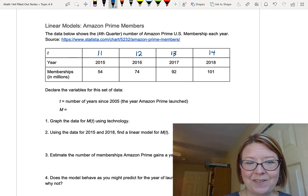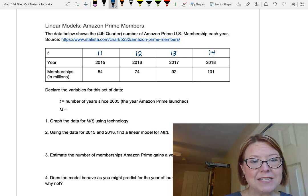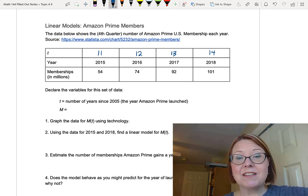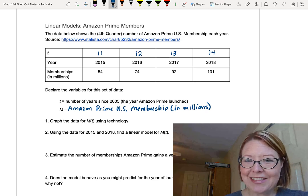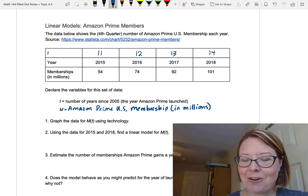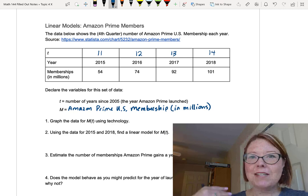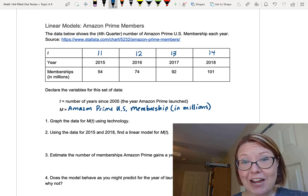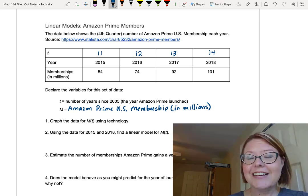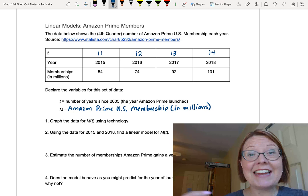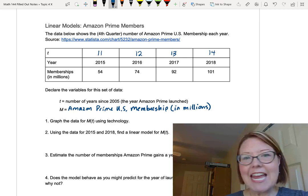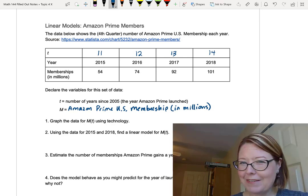The other suggested variable here is capital M. So let's let M be the Amazon Prime US membership in millions. It is important when you're declaring the variables to always use the units if there are units. This is going to be your Rosetta Stone at the end of the problem when you need to write a sentence or a paragraph about what you found. Anything like that that you want to remember at the end of the problem should be in that declaration.